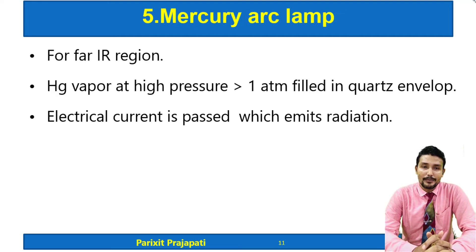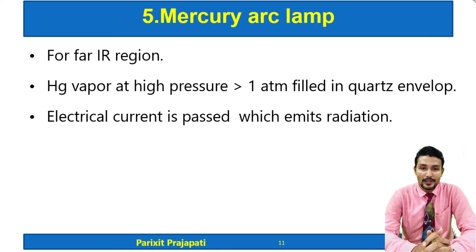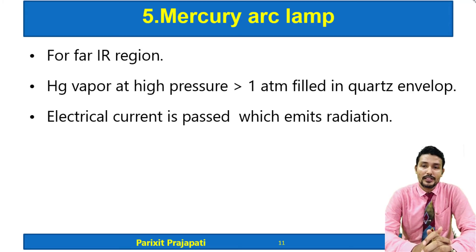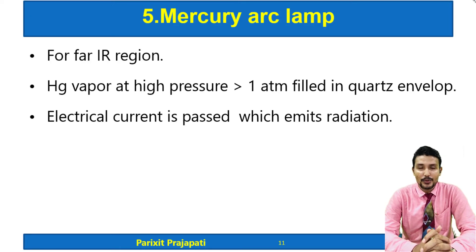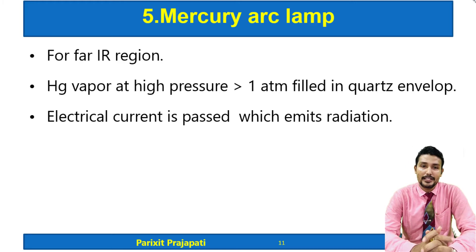The mercury arc lamp is used for the far IR region. Mercury vapor is used at very high pressure — greater than one atmosphere — which is filled in a quartz envelope. Electrical current is then passed, and IR radiation is emitted from the mercury arc.